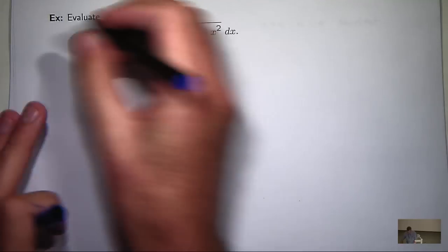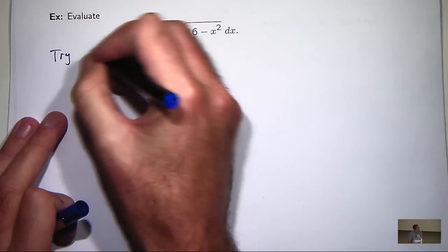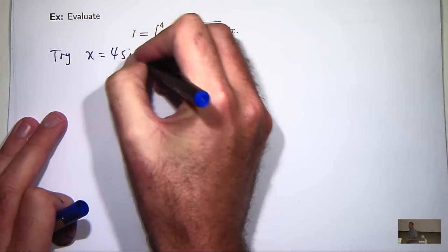So if we look back at our little table, you can see that we're going to try something like x equals 4 sine theta.